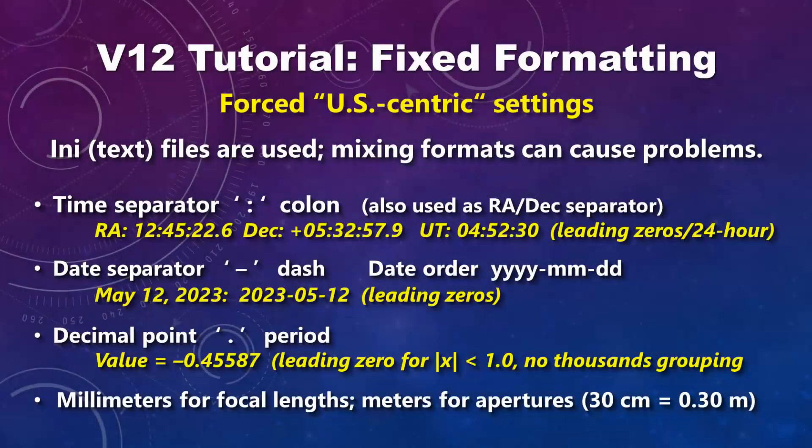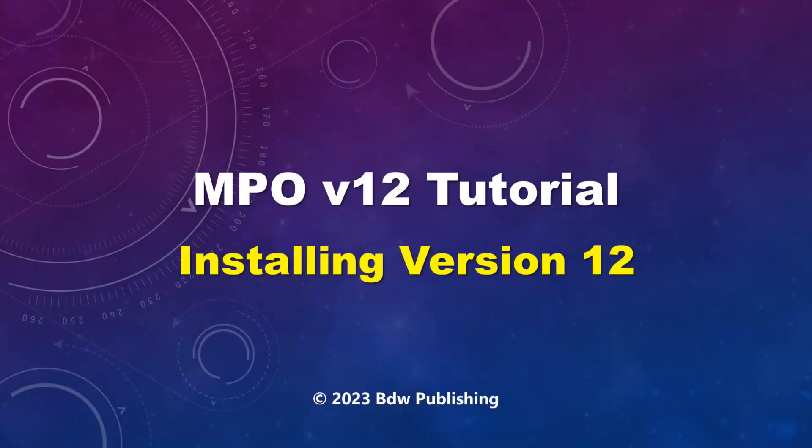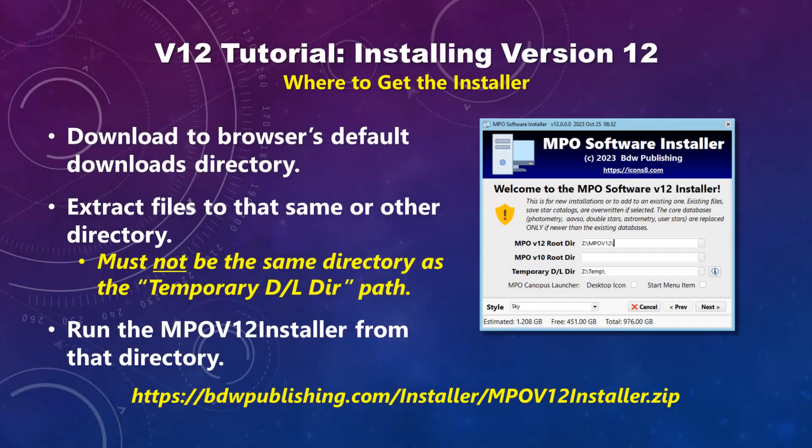Version 12 relies exclusively on INI files to store settings. It also uses INI files to save data for exporting and importing, to avoid problems with formatting and default characters when using different regional settings in Windows. Version 12 forces all programs to use US-centric settings, as shown in the information on the screen.